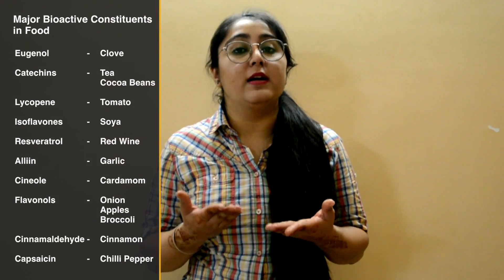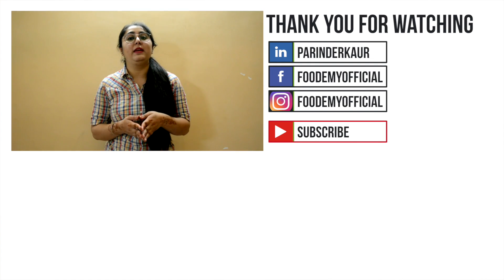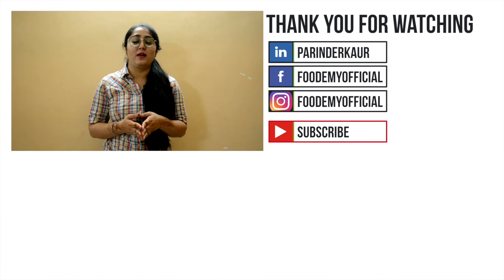Apart from all these concepts, other important topics include mass balance numericals, moisture content on dry or wet basis, and coloring pigments present in food products. This analysis should give you a rough idea of important topics for the GATE exam. Remember that all topics hold almost equal value and none should be ignored, though some extra attention can be paid to these important topics during revision. FoodME team wishes you good luck for the upcoming GATE exam — please like, share, and subscribe to our channel.